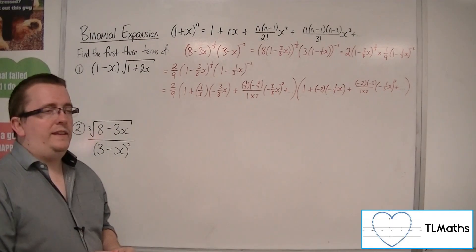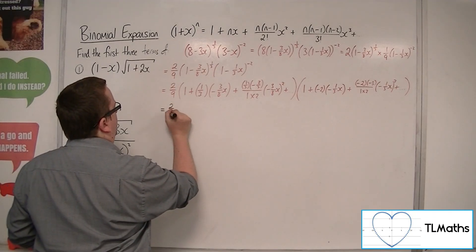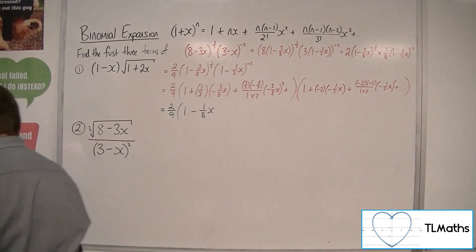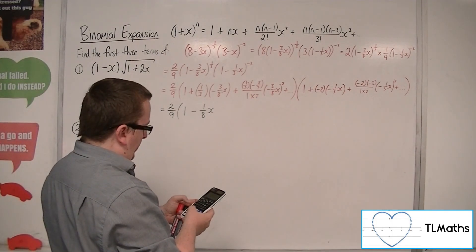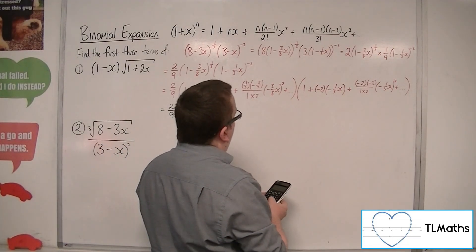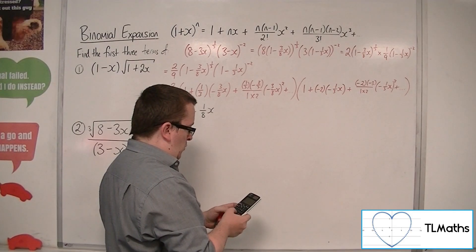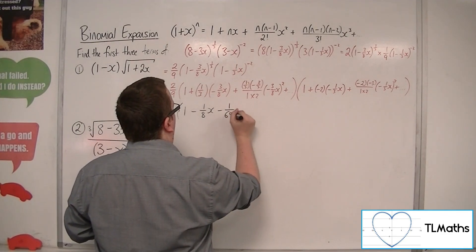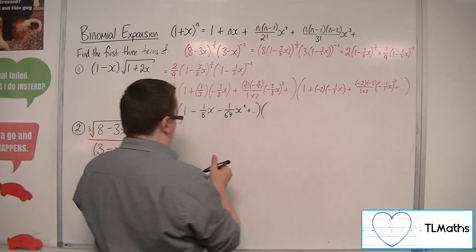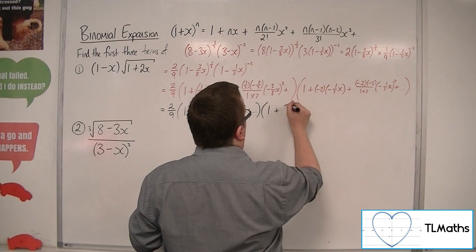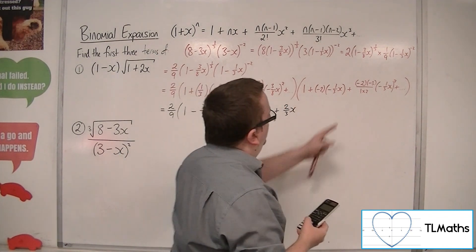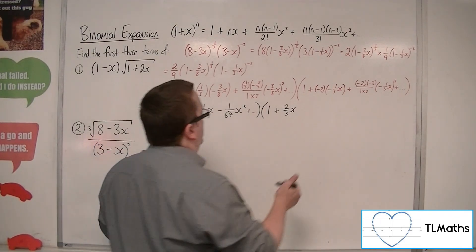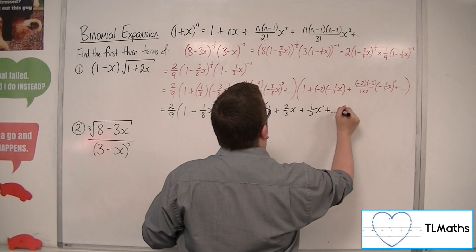Tidying these up: the first bracket gives 1 minus one-eighth x minus one-sixty-fourth x² plus other terms. For the coefficient of x² in the first bracket: minus two-ninths divided by 2 times (three-eighths)² gives minus one sixty-fourth. The second bracket gives 1 plus two-thirds x, then 6 over 2 times (one-third)² gives one-third, so plus one-third x², plus other terms.